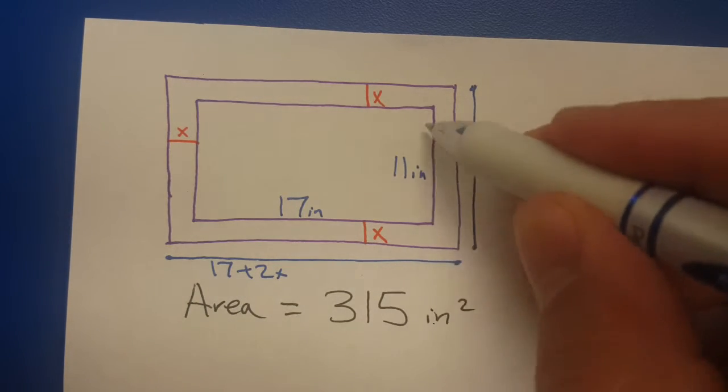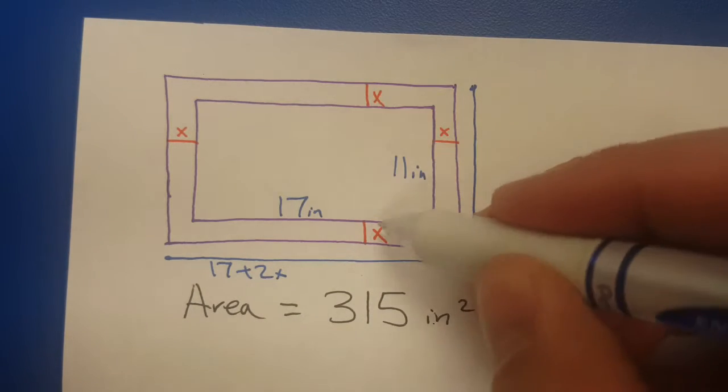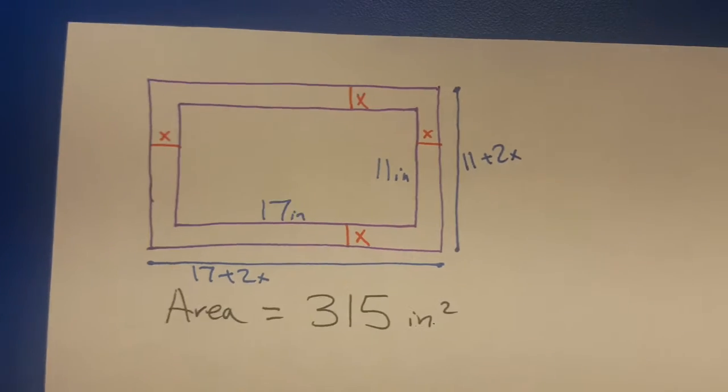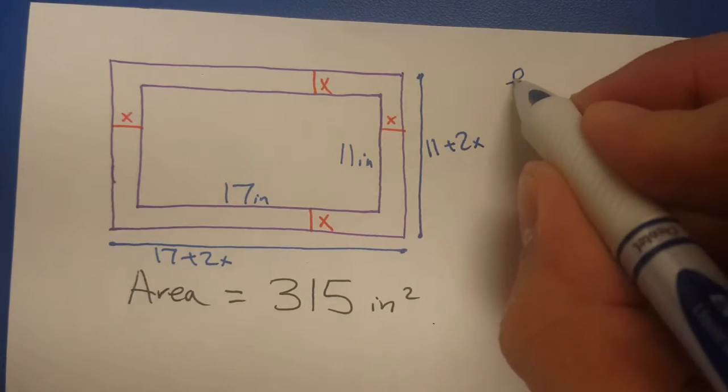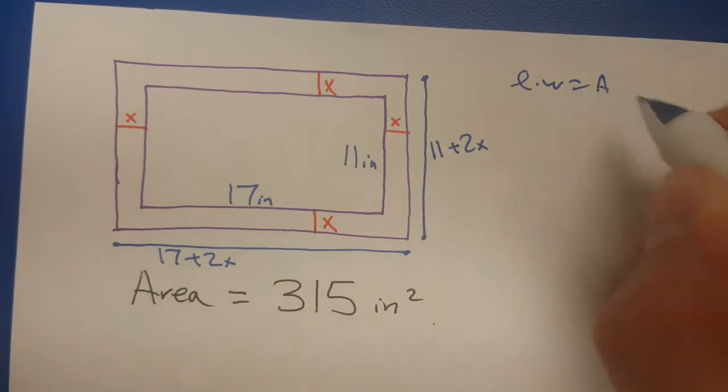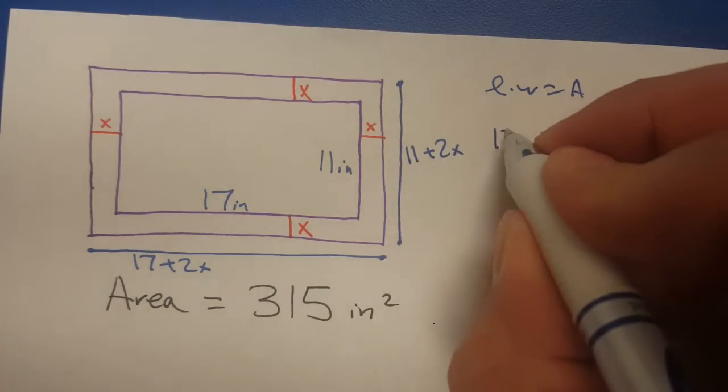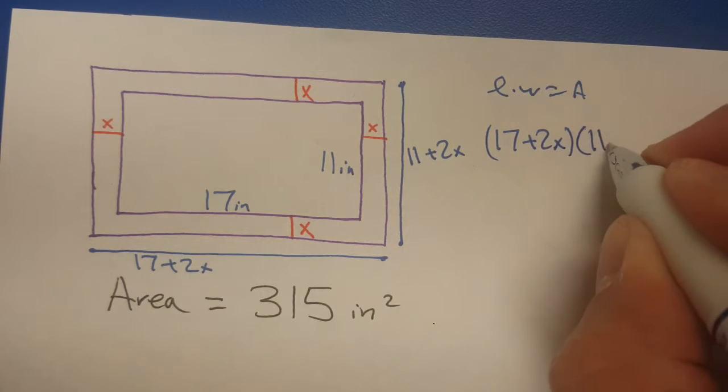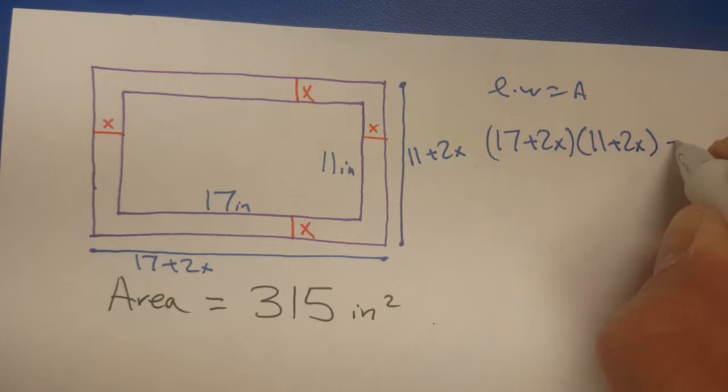It's 11 inches tall with an x on the top and an x on the bottom, so the height of our photo and frame would be 11 plus 2x. Here's our math problem friends: we know that length times width equals area, so we have to take 17 plus 2x times 11 plus 2x and then set that equal to 315.